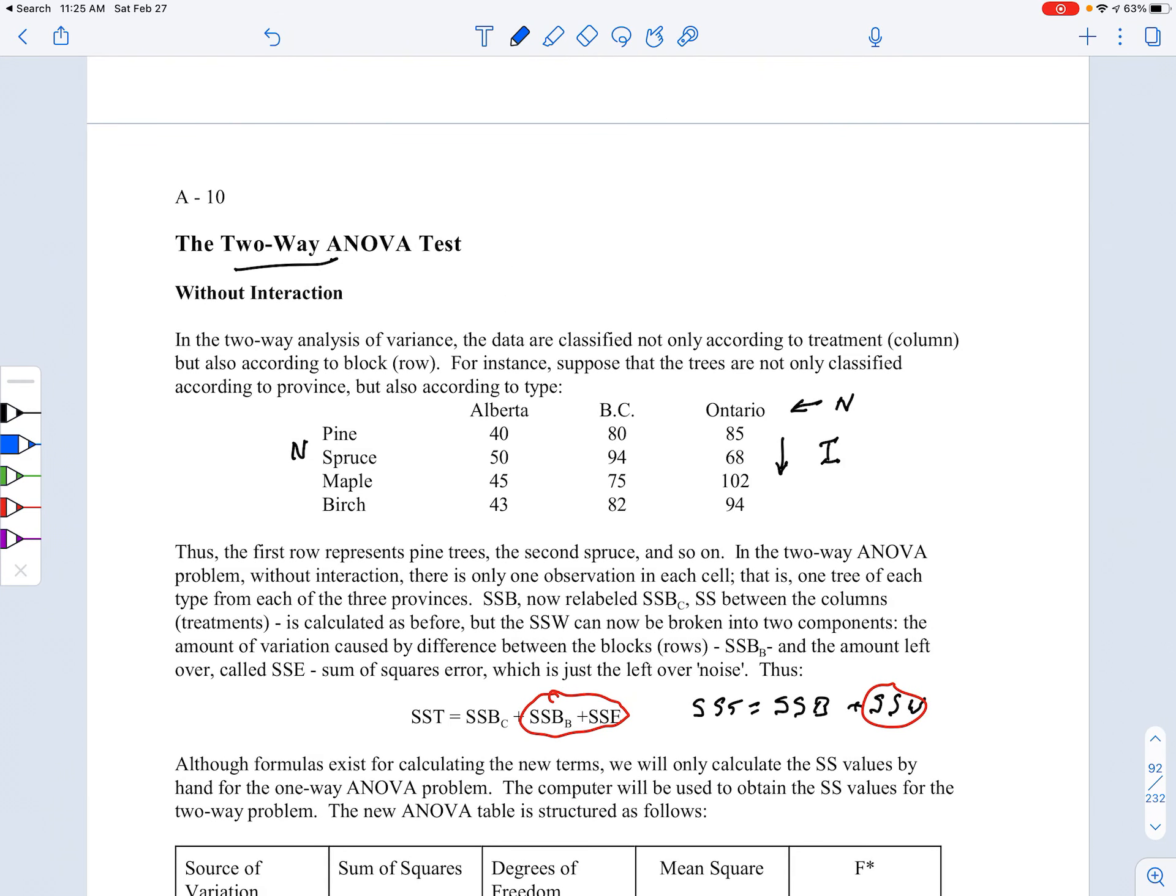So now I've got actually two SSB terms. There's the SSB between the columns - that's what the little C stands for - and then the SSB for the rows or in ANOVA language they use the term blocks, so that's why there's a B down there. Whatever is left over is called SSE, which is sum of squares error. That's all the other kind of variation and noise which is left over.